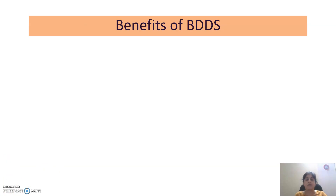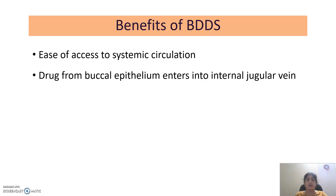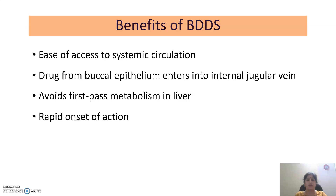Now we will see the benefits of the Buccal Drug Delivery System. It has ease of access to systemic circulation because there is no involvement of the gastrointestinal tract. Drug from the buccal epithelium enters the jugular vein, so systemic absorption is faster. It avoids first-pass metabolism in the liver, which occurs in the otherwise oral drug delivery system, causing a rapid onset of action. Termination of therapy at any time is possible because if the patient is uncomfortable, he or she can immediately remove the dosage form.